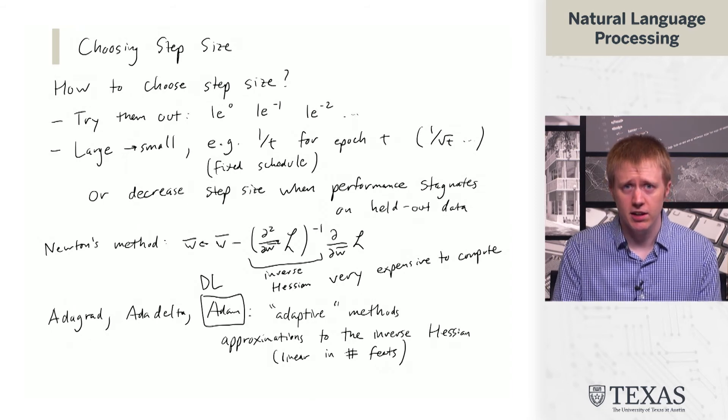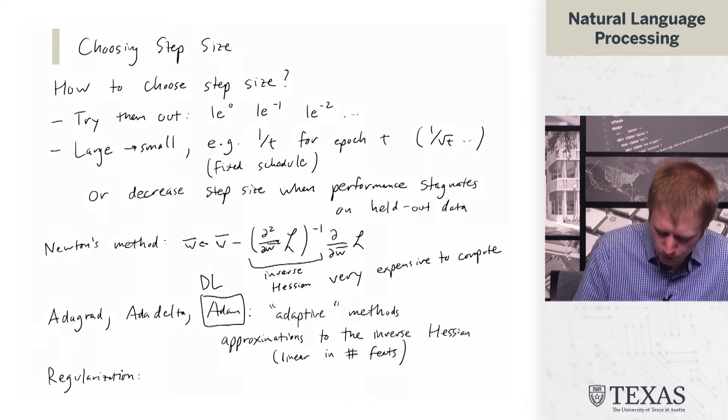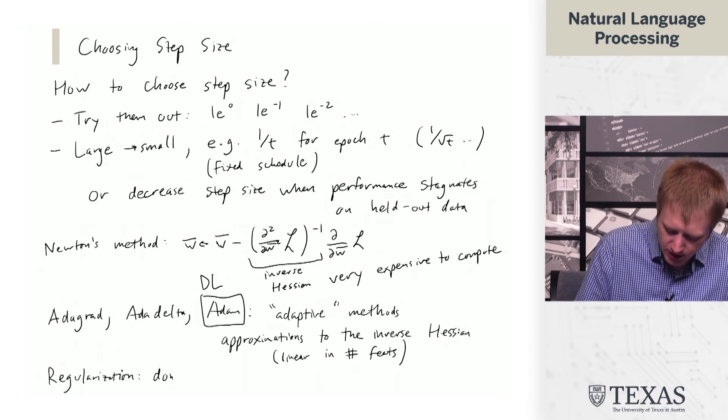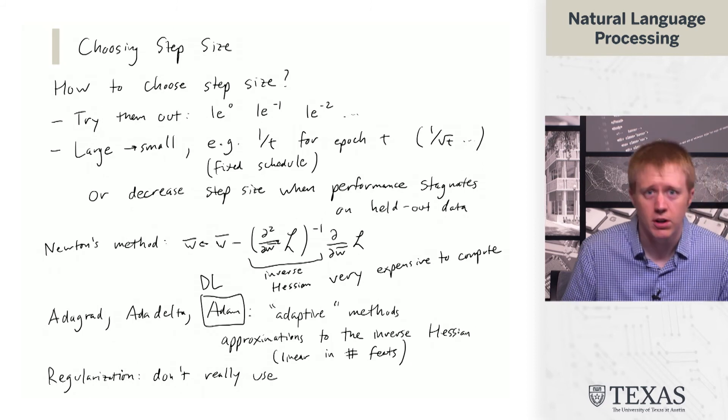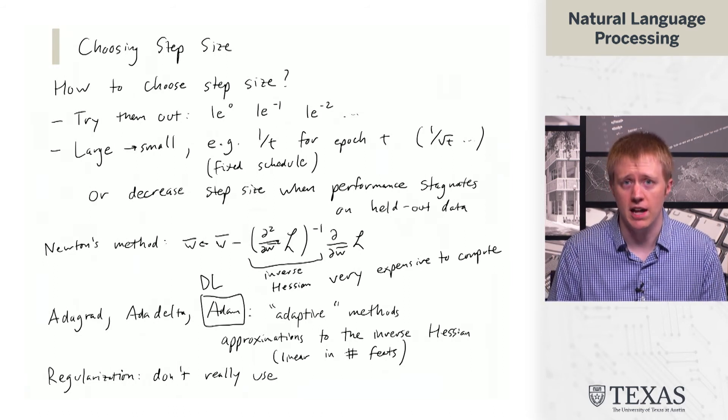The last thing I'll say about optimization before we close out is on the subject of regularization, which I'm going to say don't really use. In classical statistics, what we would say is that actually fully optimizing the value of the loss is bad. There's this notion of a bias variance tradeoff, where we want to not actually fully optimize it, and in doing so, reduce the variance of our estimator and do better on new data. The idea of regularization is useful, but we're typically not going to explicitly add regularization to our objective.